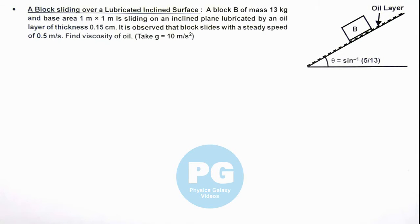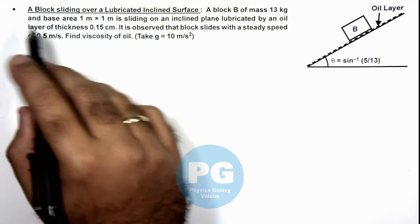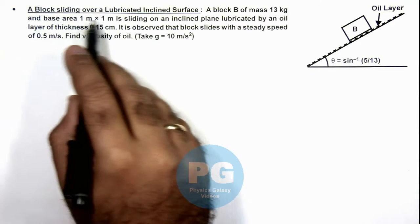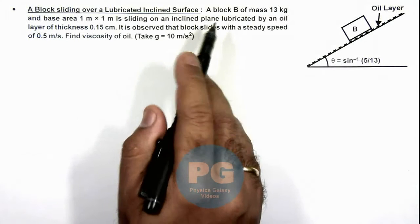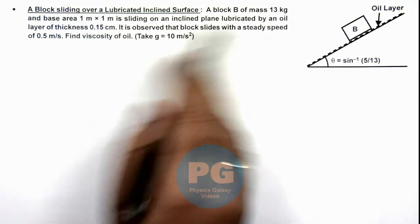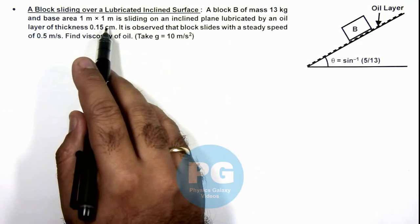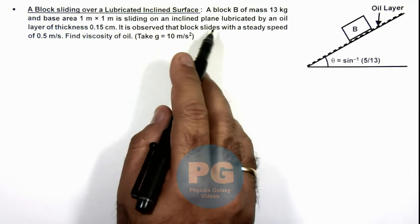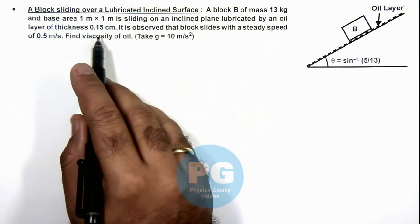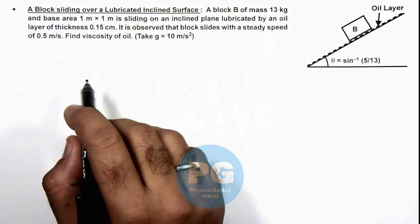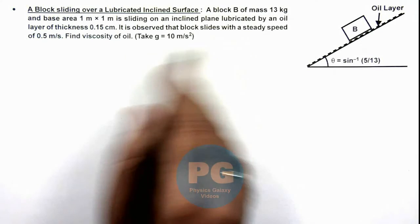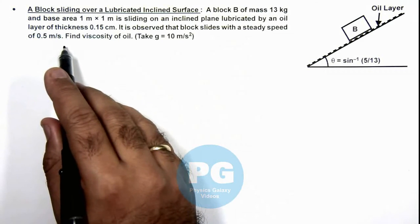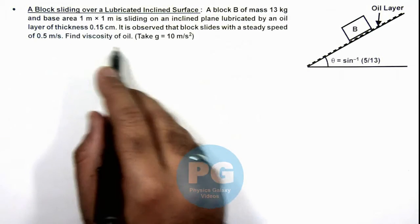In this illustration, we'll discuss a situation where a block is sliding over a lubricated inclined surface. We are given that a block B of mass 13 kg and base area 1 m × 1 m is sliding on an inclined plane lubricated by an oil layer of thickness 0.15 centimeter. It is observed that the block slides with a steady speed of 0.5 meters per second. We are required to find the viscosity of oil.